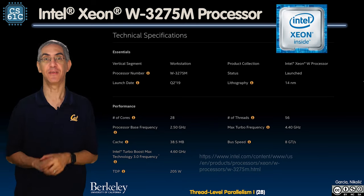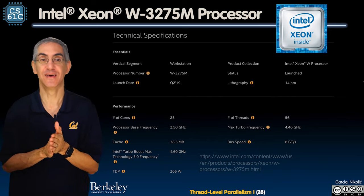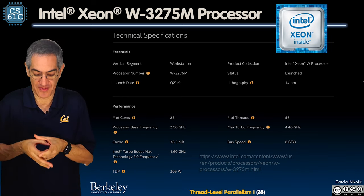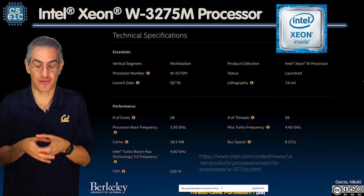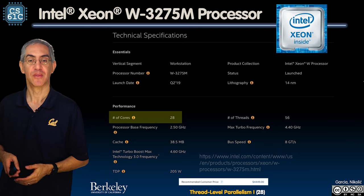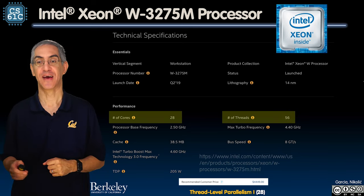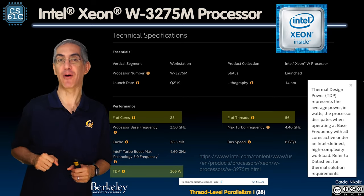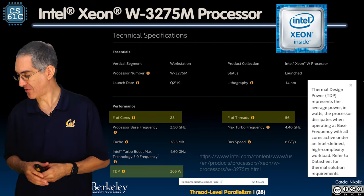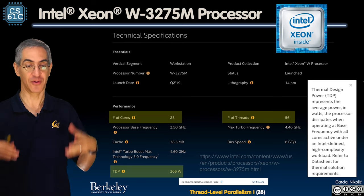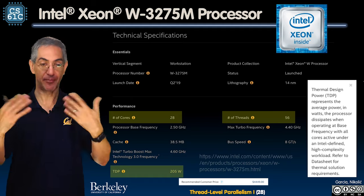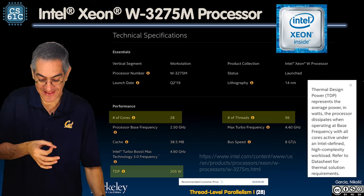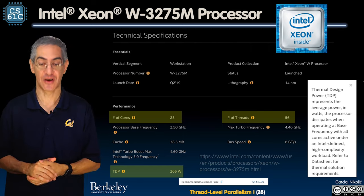Let's look at the Intel highest-end processor as of this recording in fall 2020: the Intel W-3275M. This is a very expensive device — several thousand dollars. Number of cores: 28. Number of threads: 56. That's hyper-threading in action. Thermal design power — how much power does this use? 200 watts. That's the power dissipated under an Intel-defined high-complexity workload, when you're pounding it with heavy video processing and all 56 threads are kicking in. How to cool that little chip is certainly a design challenge for the Intel team.